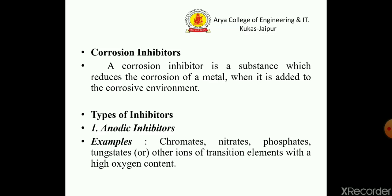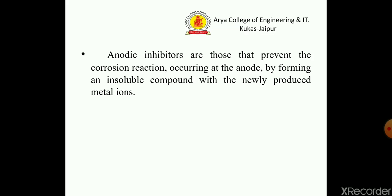Types of inhibitors: the first is anodic inhibitors. Examples of anodic inhibitors include chromate, nitrate, phosphate, tungstate, and other ions of transition elements with high oxygen content. Anodic inhibitors are those that prevent the corrosion reaction occurring at the anode by forming insoluble compounds with the newly produced metal ions.